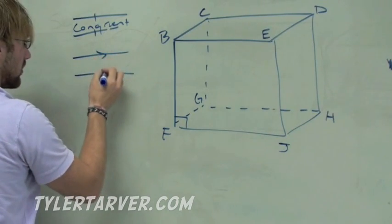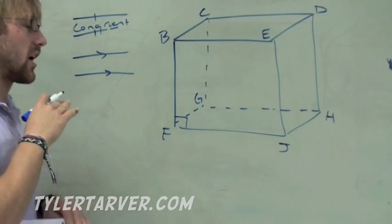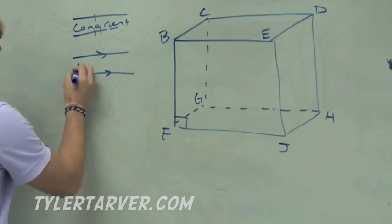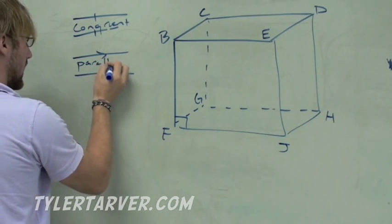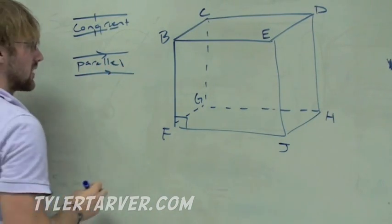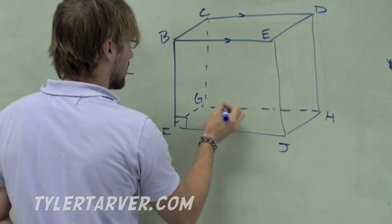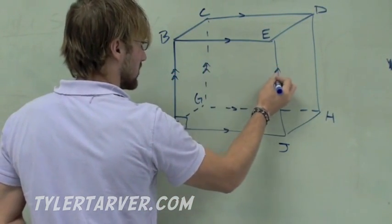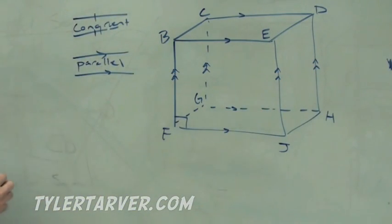When two lines are parallel, which means they extend forever and never touch, that means that they have the exact same slope. That's how you mark it. You have a little mark right there. So that's parallel.